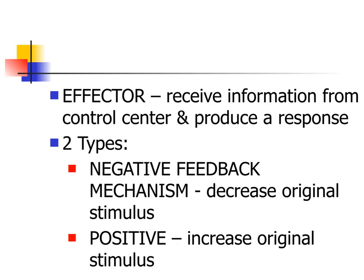You also have receptors in your blood vessels that measure the levels of hormones. There should be a correct level of hormones, so when the receptor detects that a hormone level is too low, the control center gets the message and sends a signal to the organ responsible for producing that particular hormone, telling it to start producing more. That organ is then the effector organ.